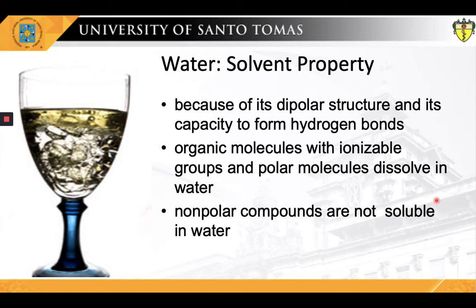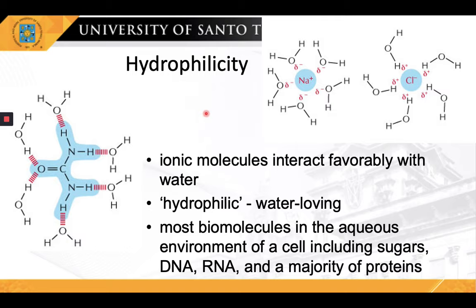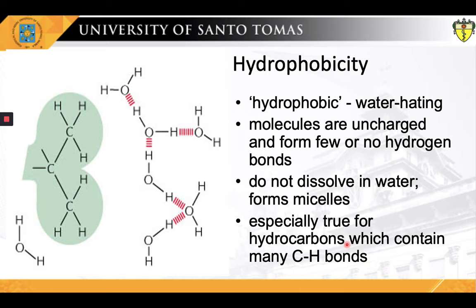Molecules carrying positive or negative charges, such as ions, interact favorably with water. Likewise, molecules with a lot of functional groups that are either polar or charged interact favorably as well. Such molecules are termed hydrophilic, meaning water-loving. A large proportion of the molecules in the aqueous environment of a cell fall into this category, including sugars, DNA, RNA, and many proteins. On the other hand, hydrophobic or water-hating molecules are uncharged and form few or no hydrogen bonds. Hydrophobic molecules tend to be nonpolar and prefer other neutral molecules and nonpolar solvents. Because water molecules are polar, hydrophobic substances do not dissolve well among them and often cluster together. This property is especially true for most hydrocarbons that contain many C-H bonds, and is important in certain biochemical structures like cell membranes.